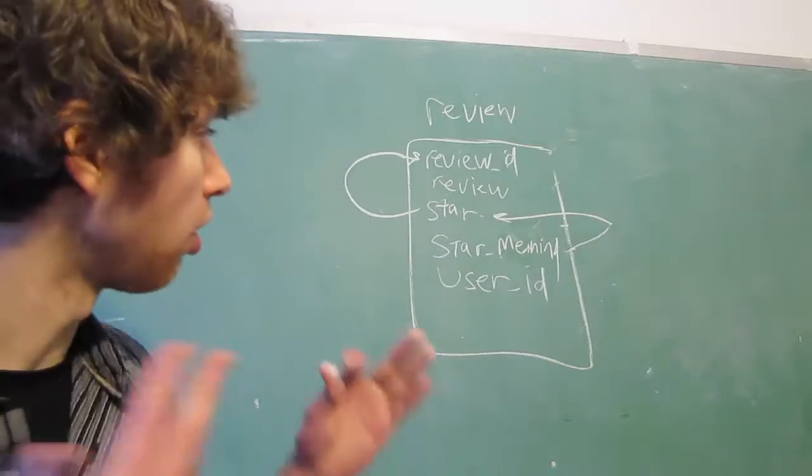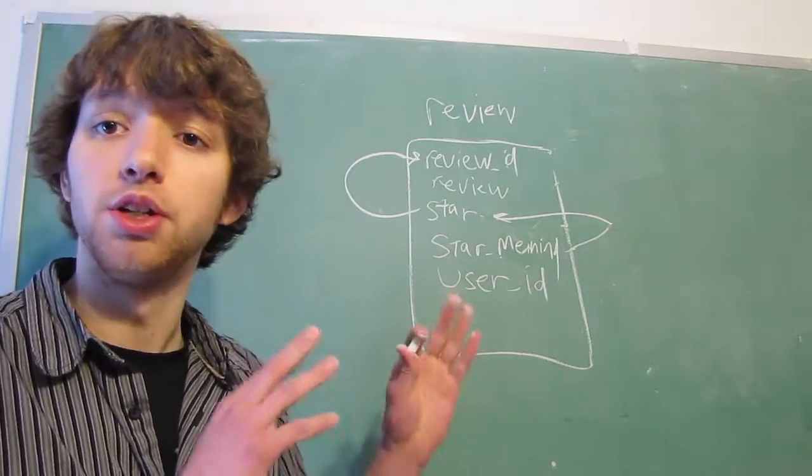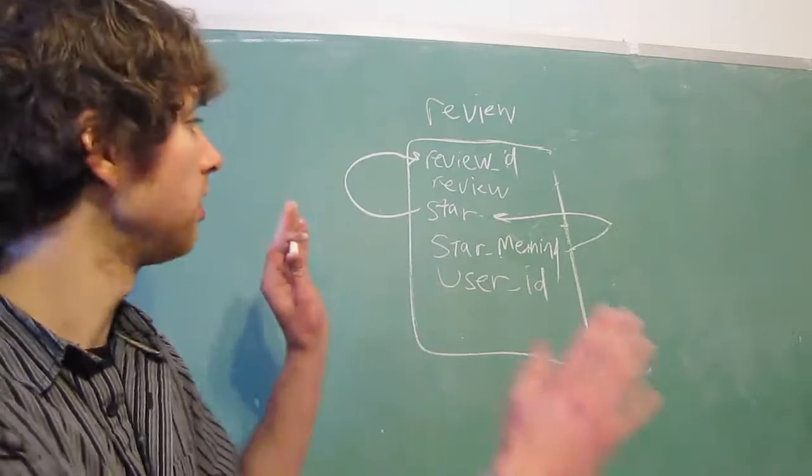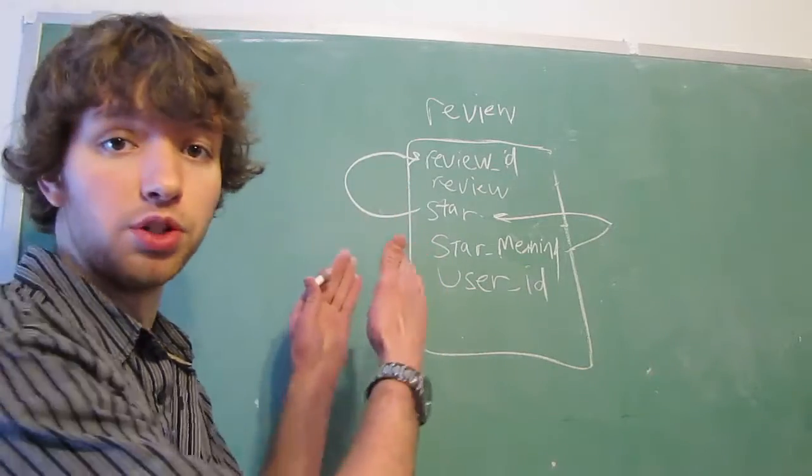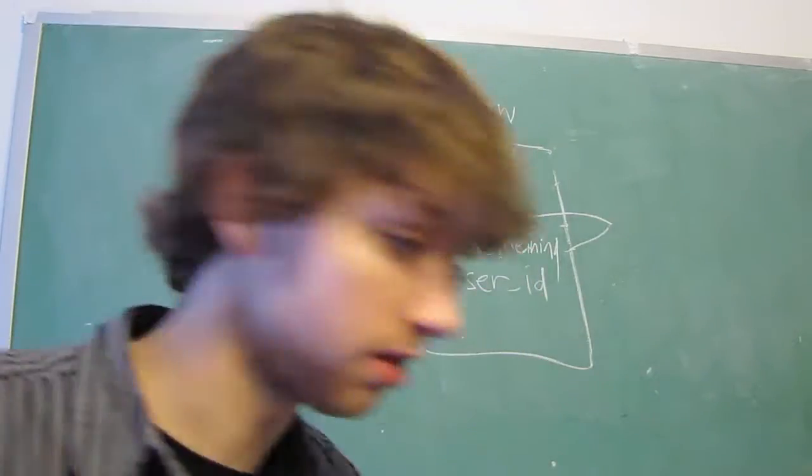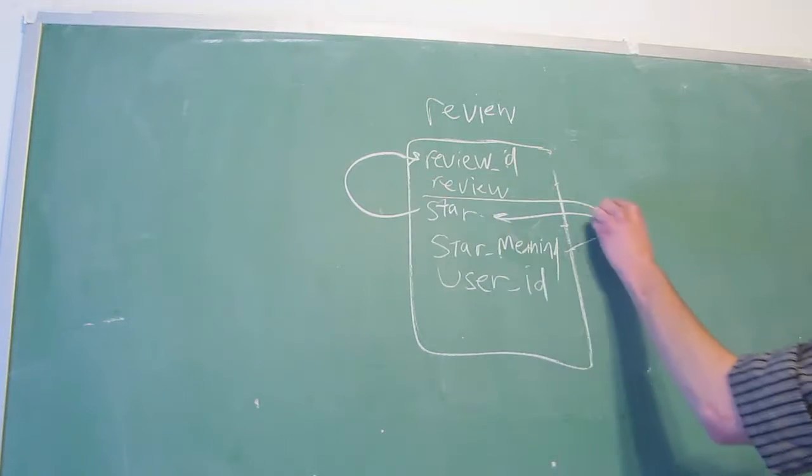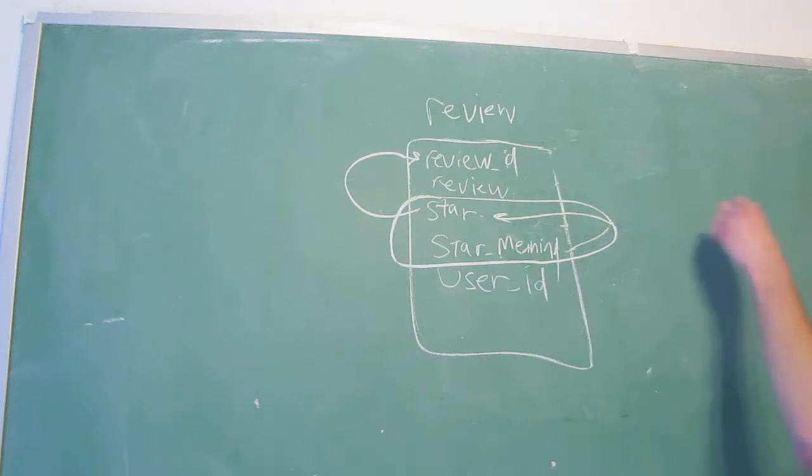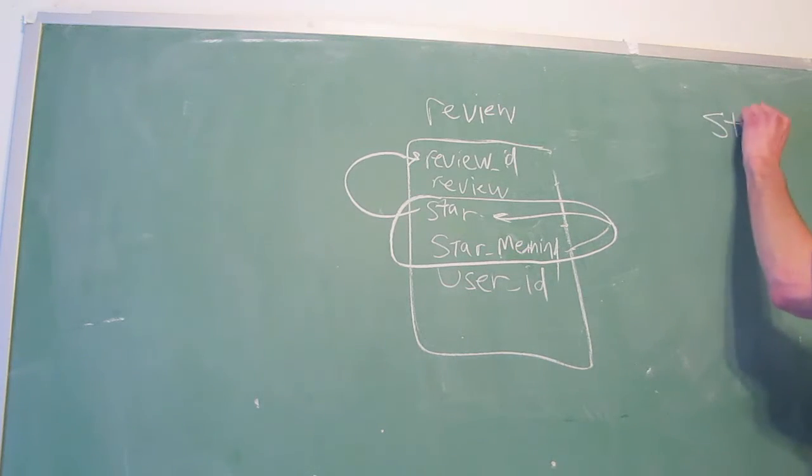So to remove this, you take the columns that are causing a problem, you move them to a separate table, and then you create a foreign key in place of them, which references the actual other column. So let's do this. So since these columns right here are the ones causing the main problem, we take them, we put them in their own table. We have a star table.